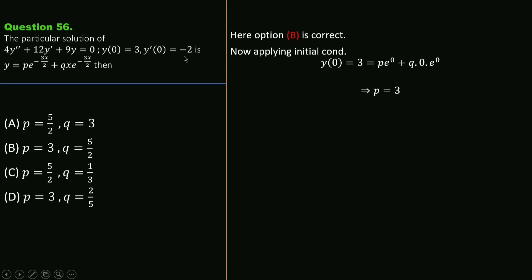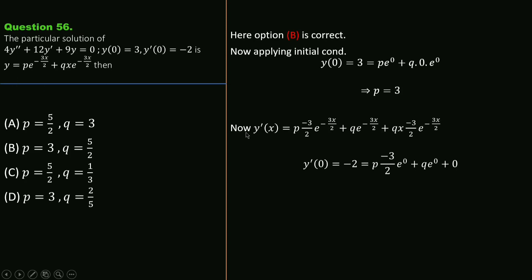Now using y'(0) = -2, we find y'(x) = P·(-3/2)·e^(-3x/2) + Q·e^(-3x/2) + Q·x·(-3/2)·e^(-3x/2). Applying the initial condition by substituting x = 0, we get Q = -2 + (3/2)·P.